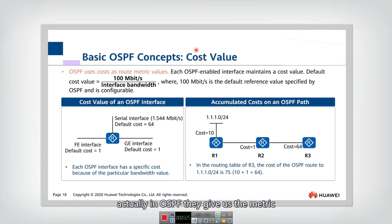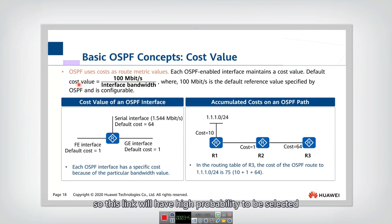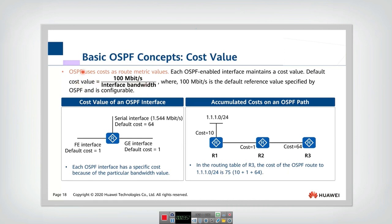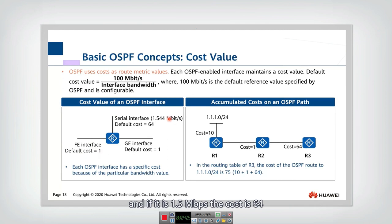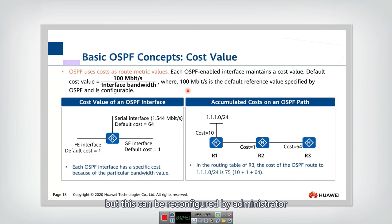How is cost calculated? In OSPF, the cost value is defined as a certain constant divided by the interface bandwidth. If the bandwidth is very large, the cost is very small, so this link has a high probability of being selected. If the bandwidth is small, the cost is very high. For example, a 100 Mbps link has a cost of 1, and a 1.5 Mbps link has a cost of 64. This cost is a default reference value but can be reconfigured by the administrator.